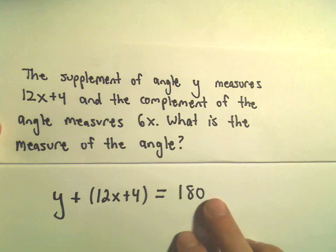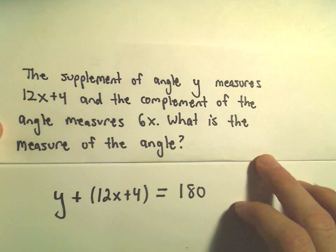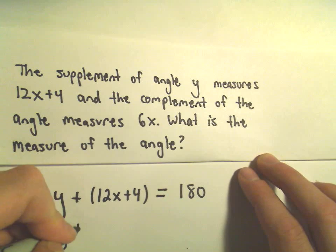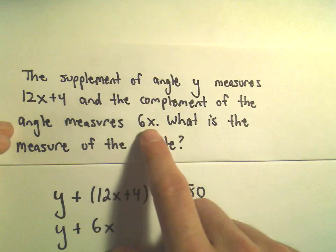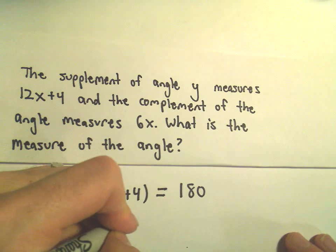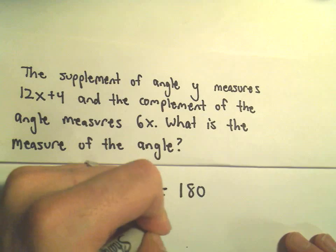I'm going to leave off the little degree circle. And we know that the complement of this angle y, which has measured 6x, well that means if we add y plus 6x, that's going to add up to 90.